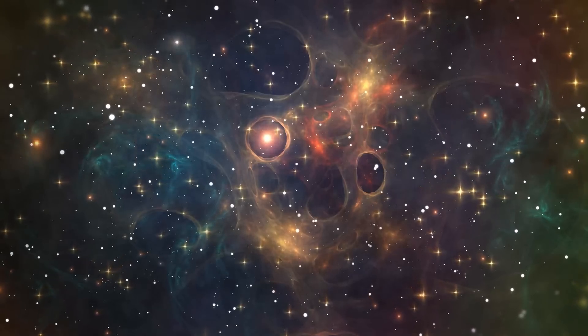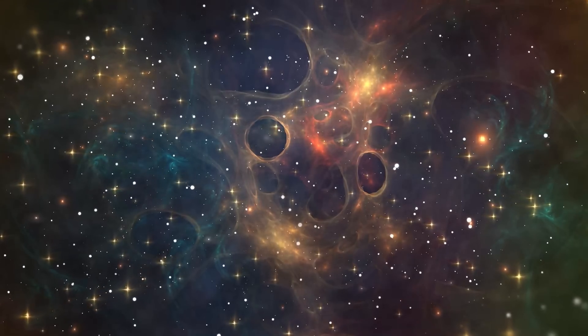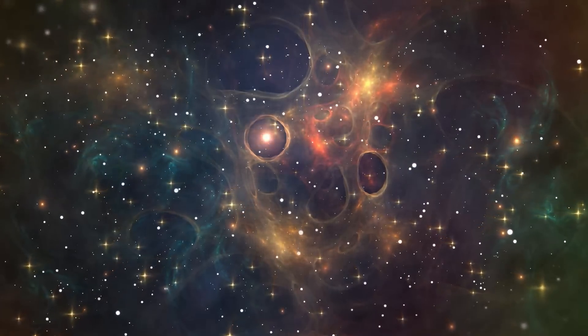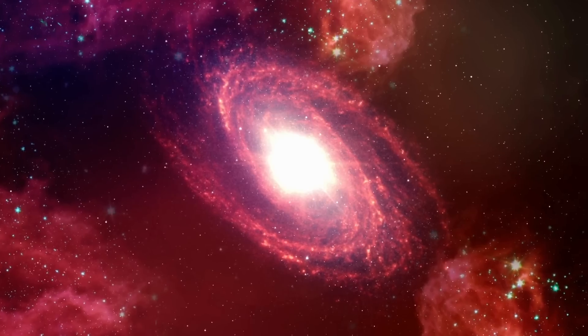For example, if we just use galaxies that rotate in the same way as the Milky Way, the Hubble constant drops by about four percent and is actually consistent with a lot of different models, removing the tension completely. But if we use galaxies that rotate in the opposite direction, this value goes up, increasing the tension even more. So here there's maybe something to consider for future studies.